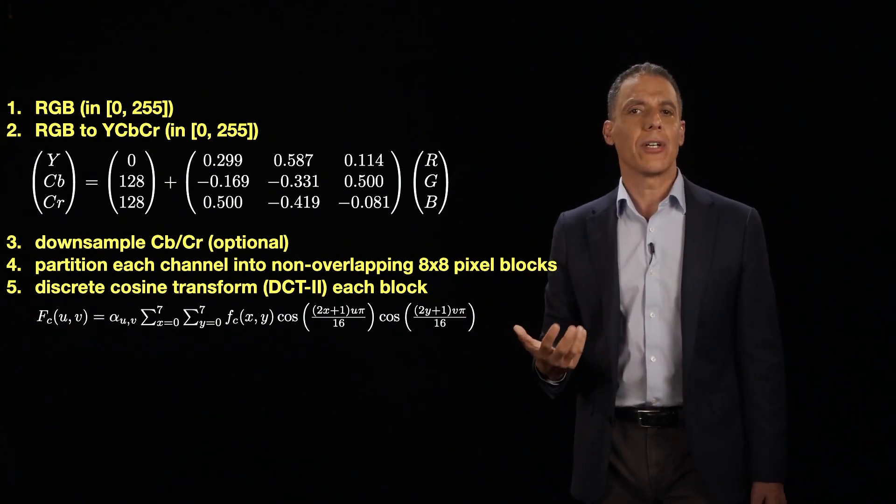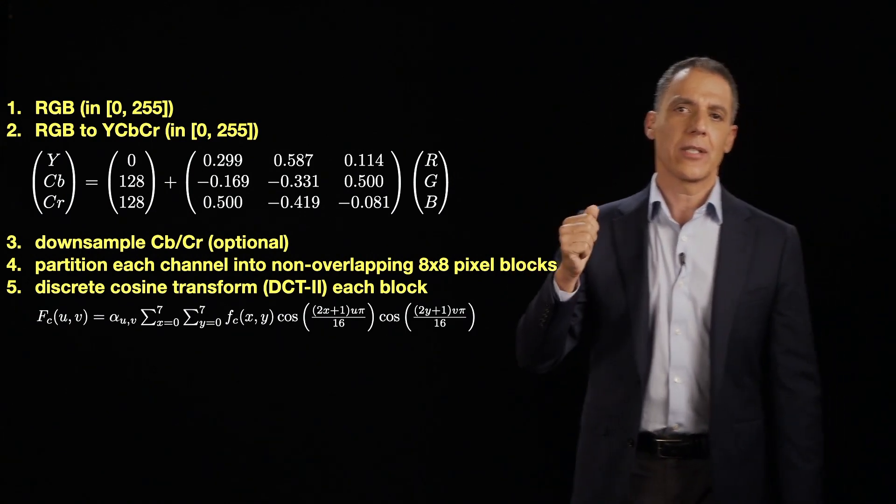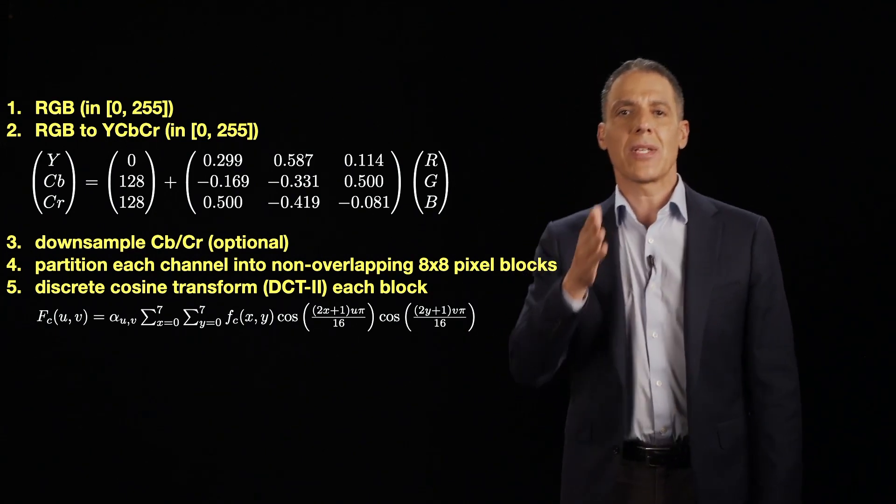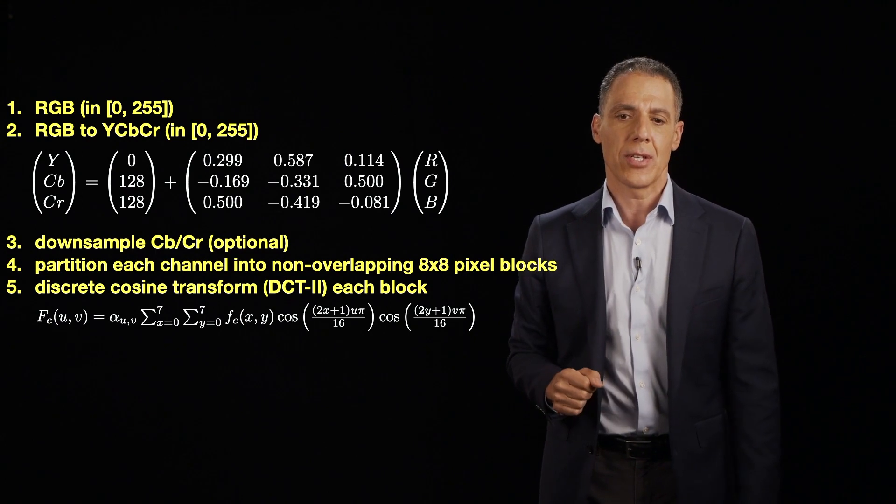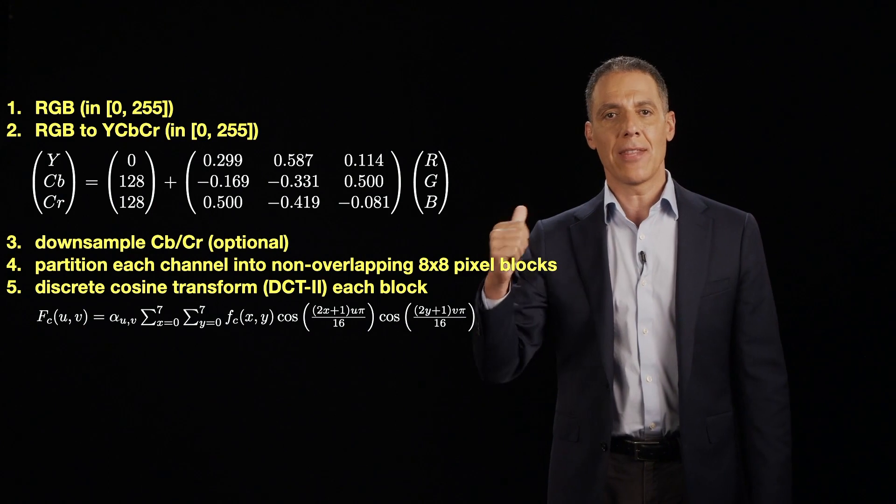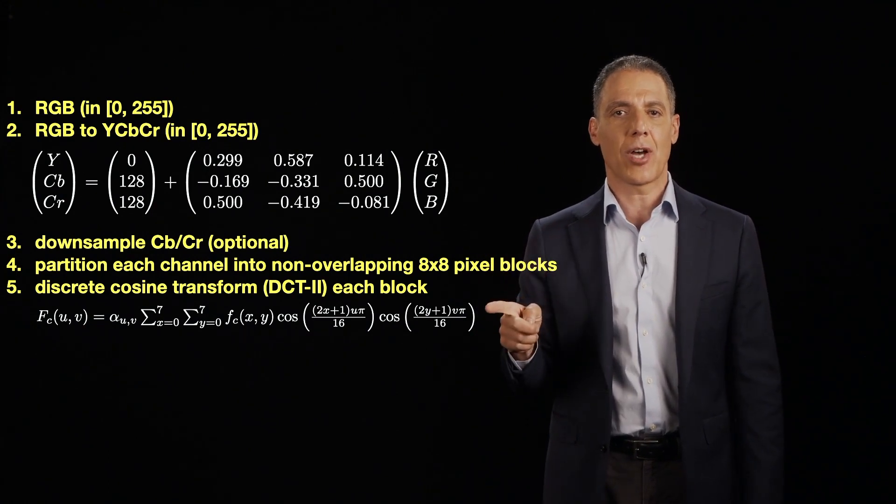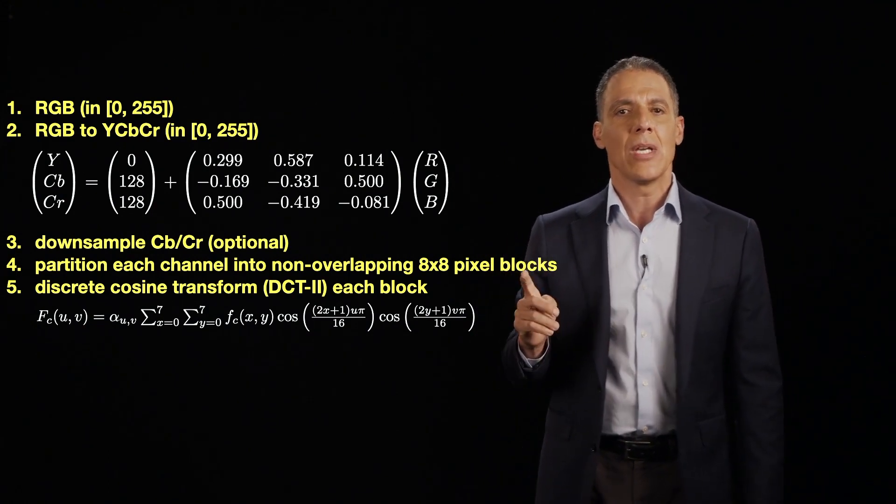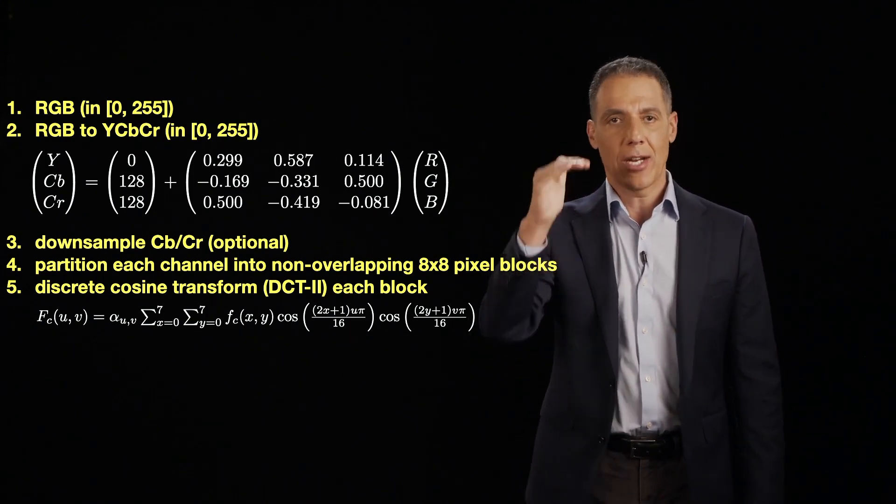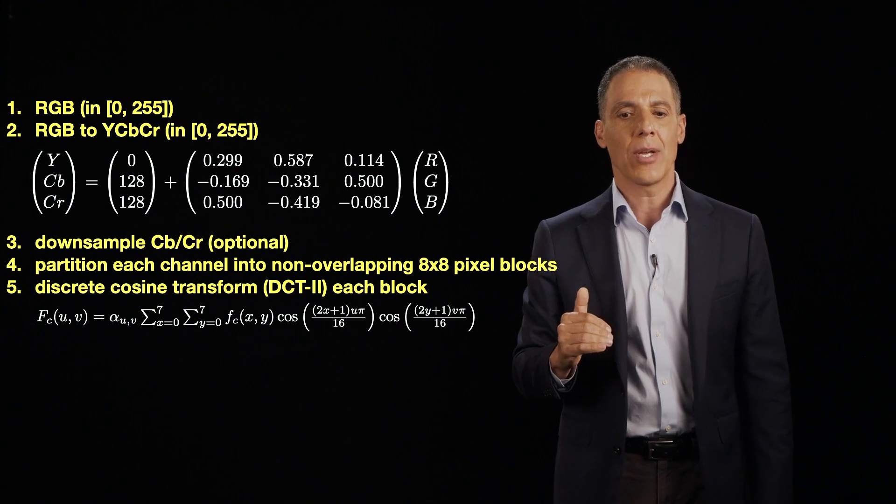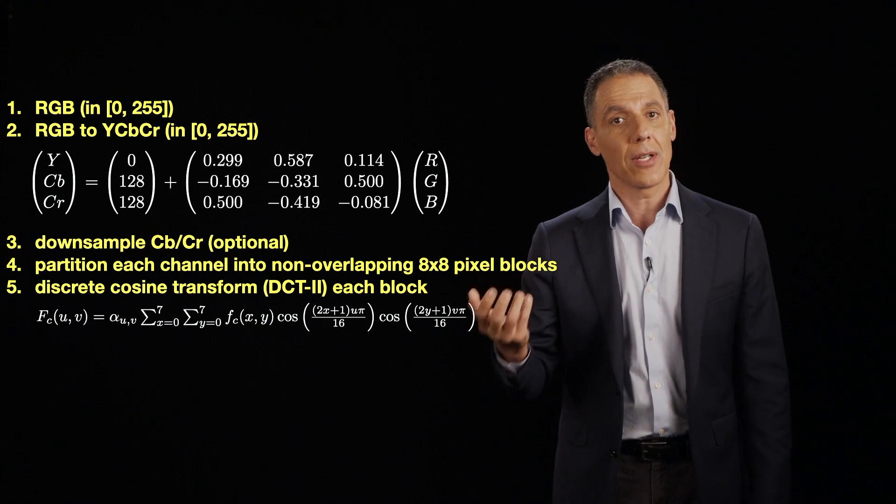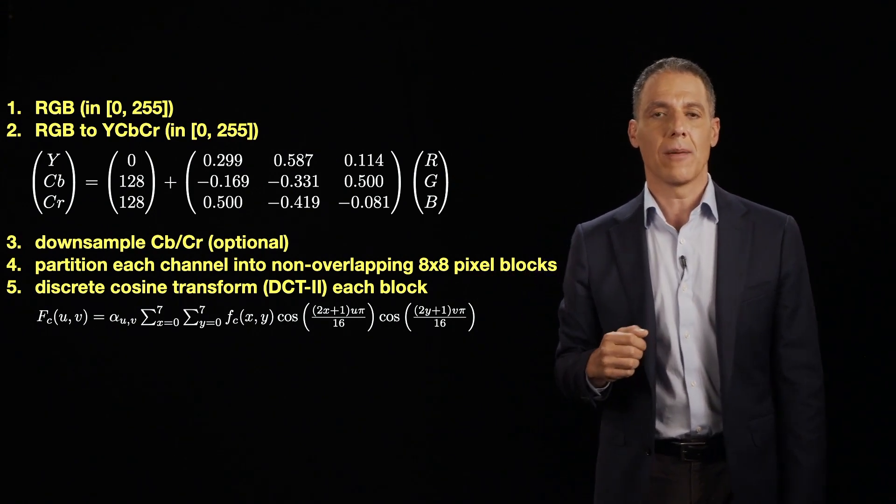And now we're going to do the heart of JPEG, which is the discrete cosine transform, which itself is a variant of the Fourier transform, which is something that we will be covering later on in this semester. I'm not going to go through this equation right now, but I will say a few things about it. At the exercise at the end of this lecture, we'll talk about this equation in more detail. What the DCT does is it converts the luminance channel or the chroma channel. We're going to do each channel separately now into a frequency representation, in particular in terms of the discrete cosine transform.